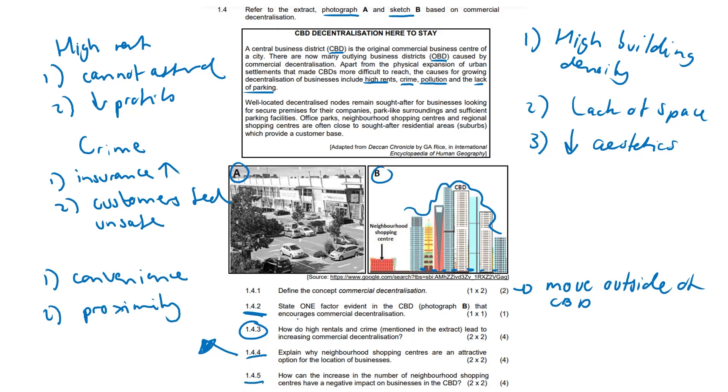1.4.5 How can the increase in the number of neighborhood shopping centers have a negative impact on businesses in the CBD? So businesses close down, owners lose profits. That was all you needed. But also, maybe the value of the property decreases. Maybe buildings become vacant. This could decrease buying power. There could be increased costs for security or insurance, or maybe buildings become dilapidated.